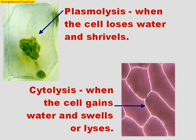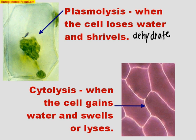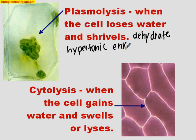Looking at some examples: plasmolysis versus cytolysis. Plasmolysis is when the cell loses water, or it shrivels — another way to say this is dehydration, the cell is losing water. Think about a scenario that would result in a cell losing water. If you are losing water, you are in a hypertonic environment. Environment always refers to the outside of the cell. So if your environment is hypertonic relative to the interior of the cell, water will leave the cell and the cell will shrivel — it will dehydrate, it will undergo plasmolysis.